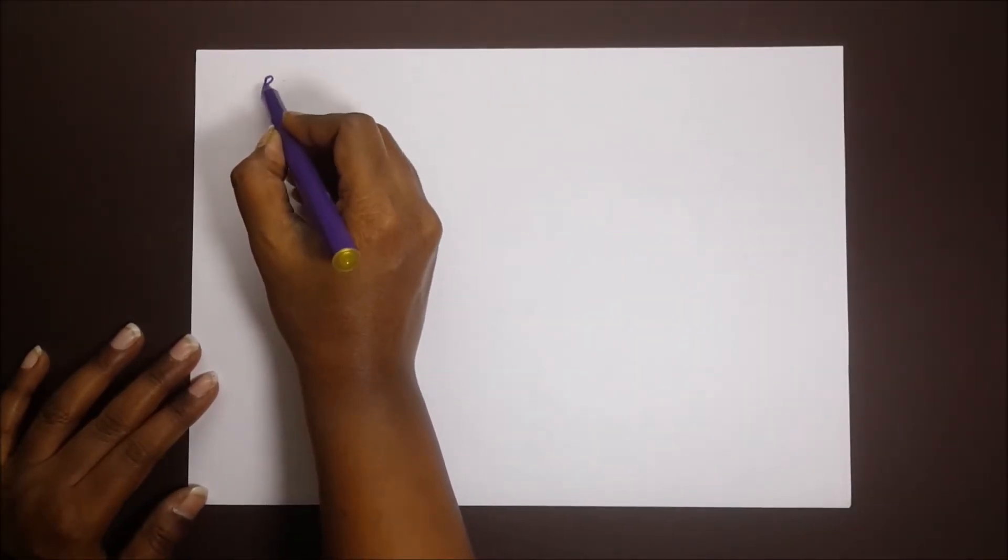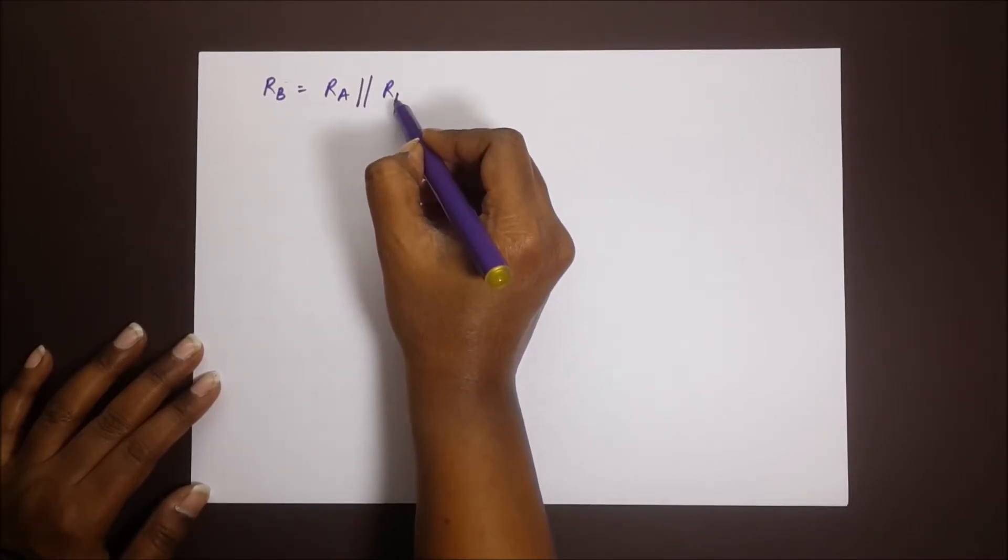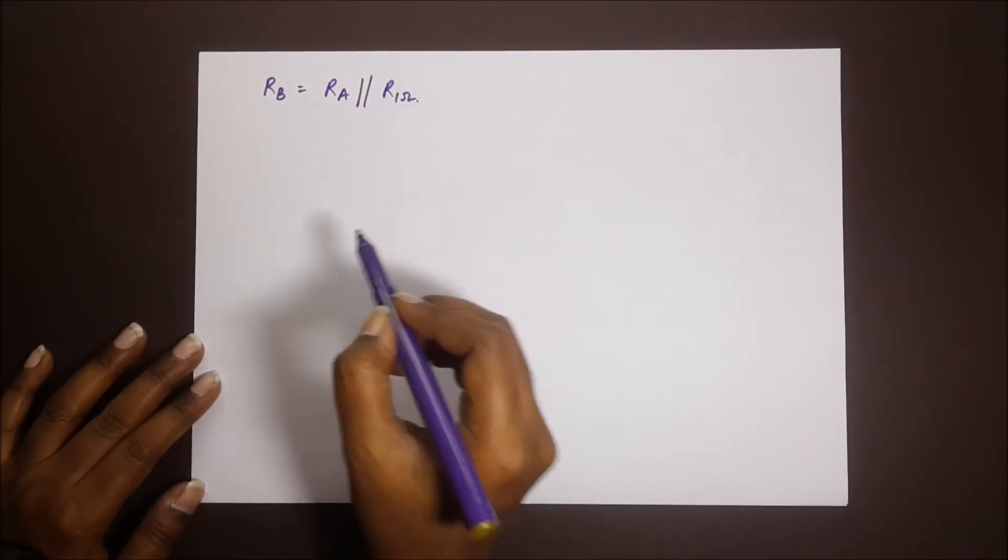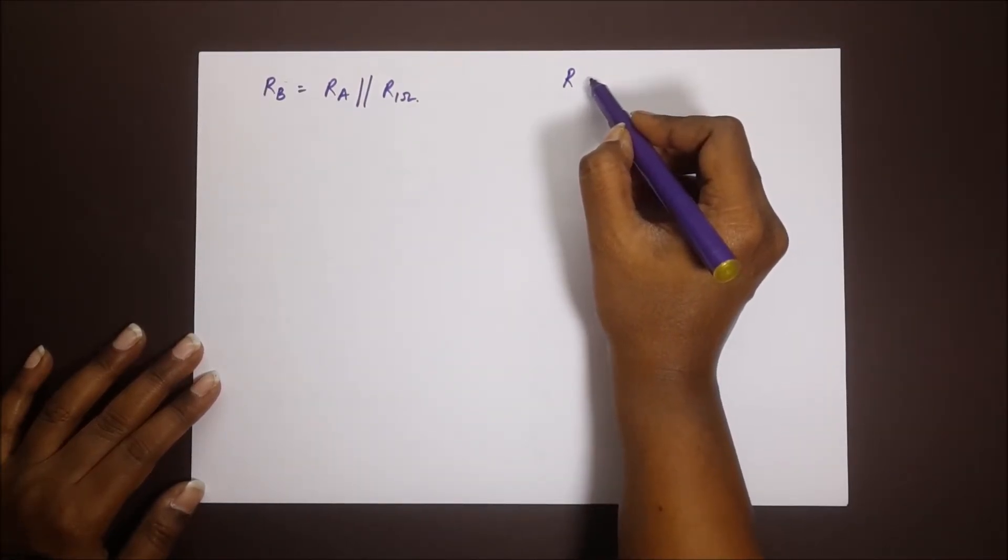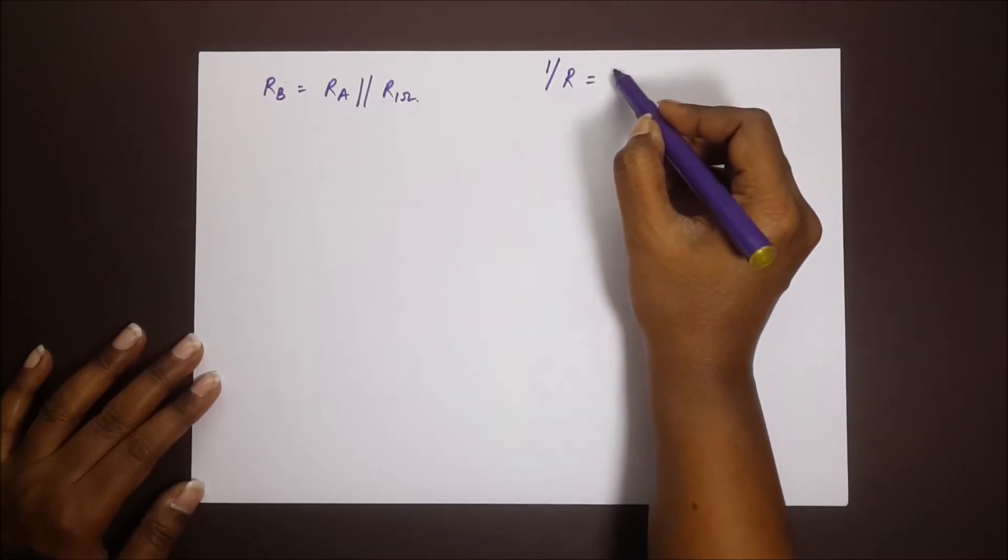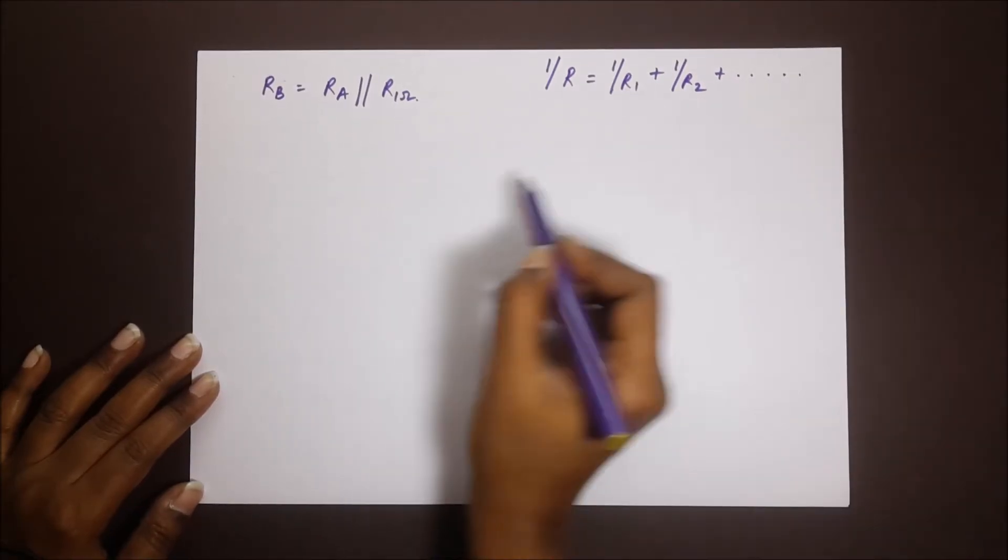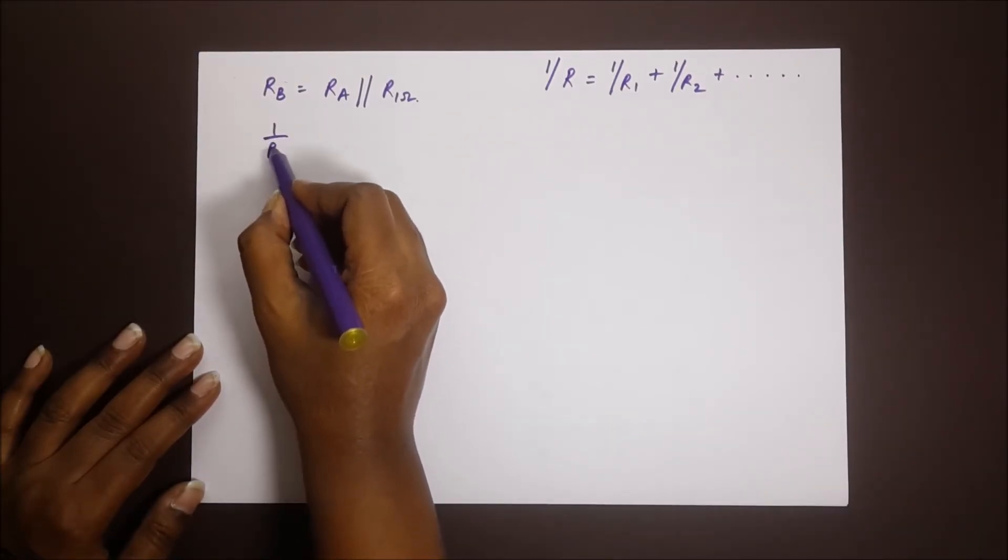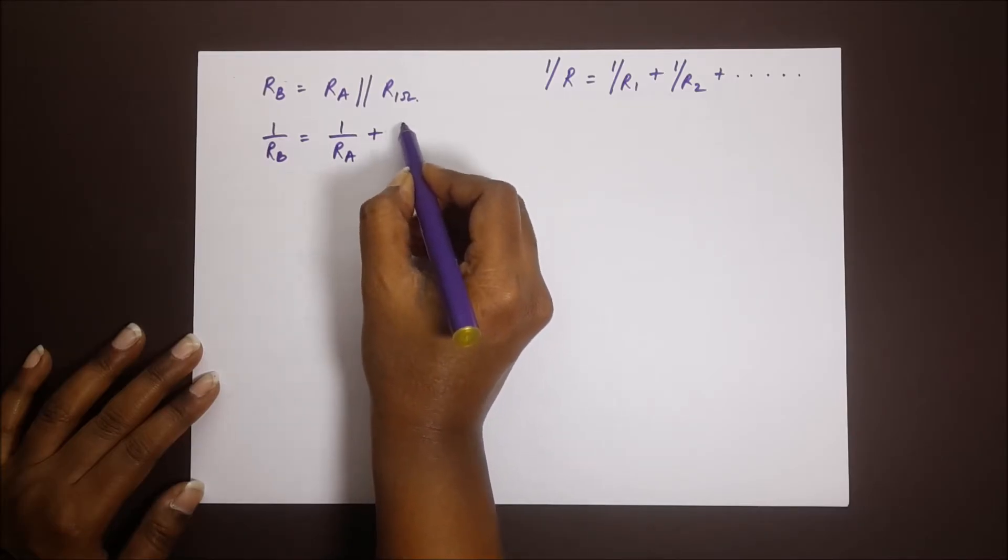So we have RB is RA parallel to R of one ohm. And you know the formula there. The formula of the resistance or the total resistance is one by R is equal to one by R1 plus one by R2 plus so on and so forth. So here we have one by RB is equal to one by RA plus one.